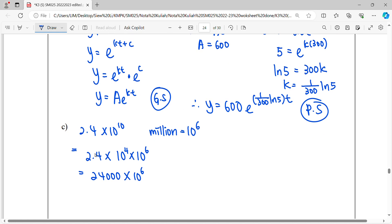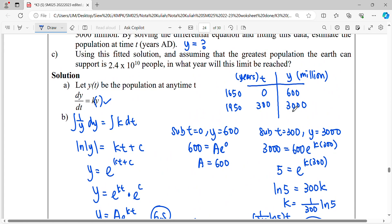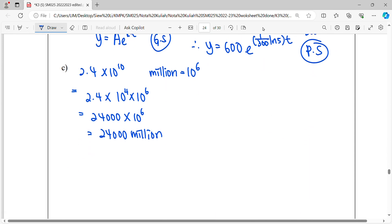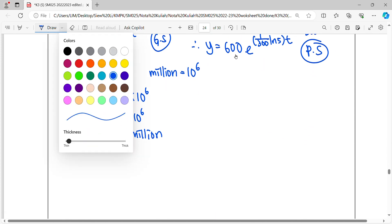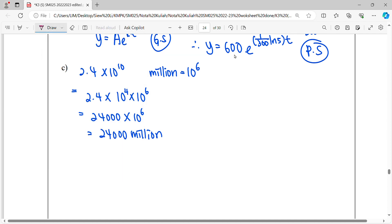In other words, it will be equal to 24,000 million. They ask, when you have 24,000 million, when is the time? By using this particular solution, we substitute our 24,000 million.